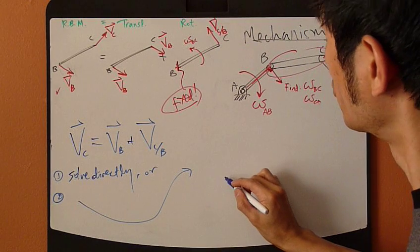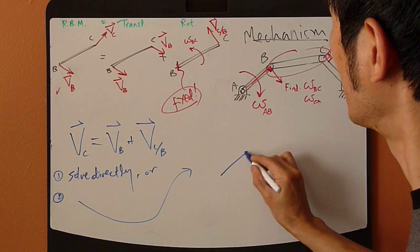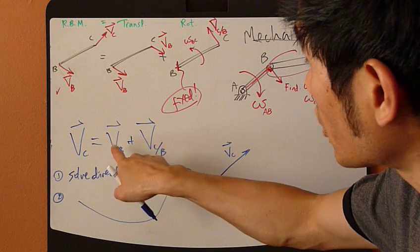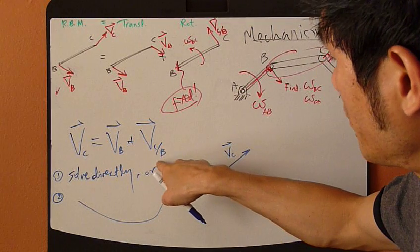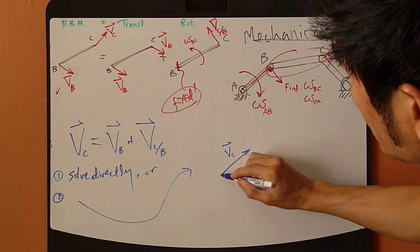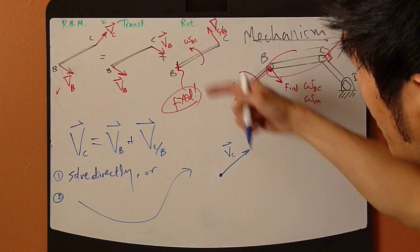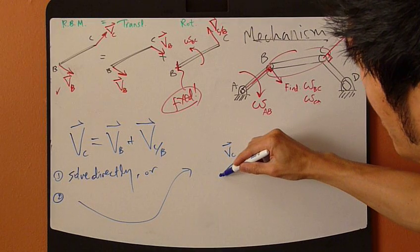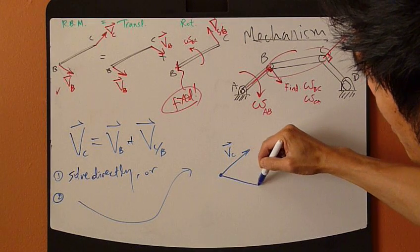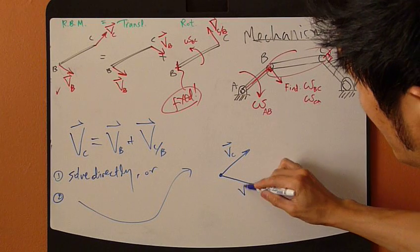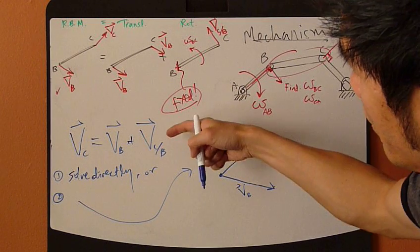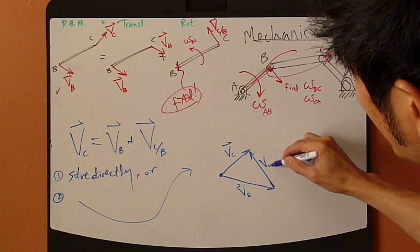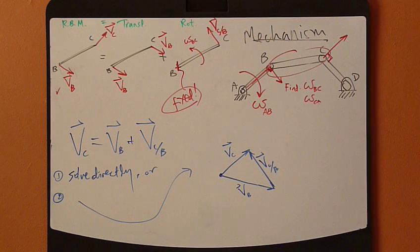That's my VC vector going up this way, equals VB plus VC/B. So just draw VB back to the original starting point. So it goes VB going down this way - this is my VB - plus this vector which goes up this way. So this is my VC/B.